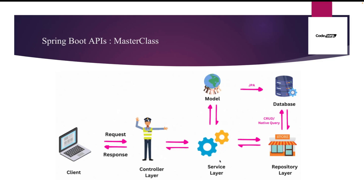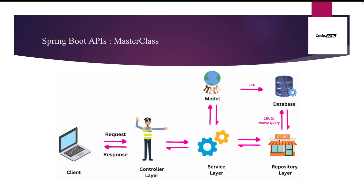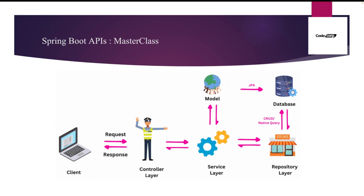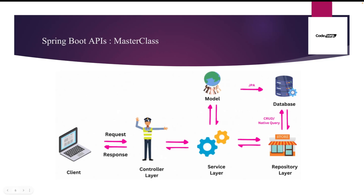If I pass a particular condition to the repository layer — like find the employees living in Delhi — the repository layer will run a SQL query, or any CRUD operation, find-by-id, or find-by-name, on the database and fetch those employees. After that, the repository layer returns data to the service layer, the service layer returns data to the controller, and the controller sends the data back to the client, browser, or Postman.